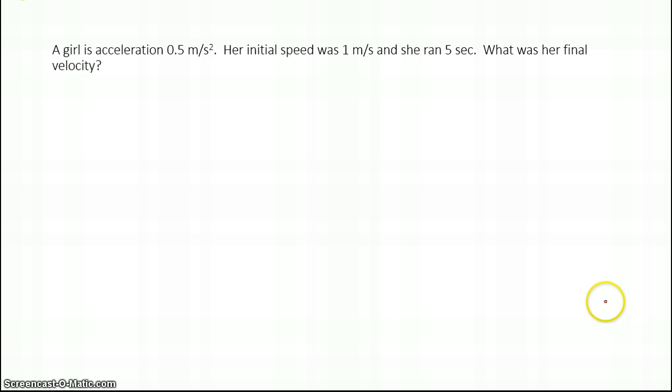For this one here, a girl is accelerating 0.5 meters per second squared. Her initial speed was 1 meter per second. She ran 5 seconds. What is her final velocity? Again, stop your video and let's see how close you can get to what I have. Next thing, again, label what we have. Here we have acceleration. Here it looks like we have a velocity. It even says initial speed, so I know that's initial velocity. And I have 5 seconds. I know that's the value of time.